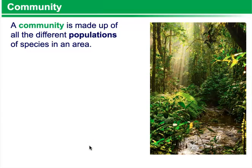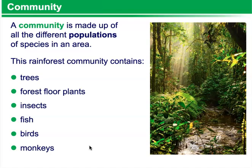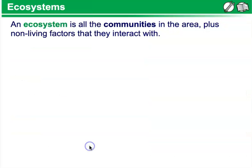Communities. A community is made up of all of the different populations of species in an area. This rainforest community contains trees, forest floor plants, insects, fish, birds, and monkeys — all of these are part of the community.